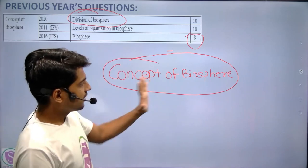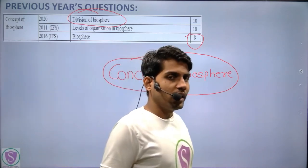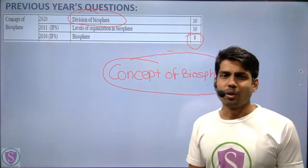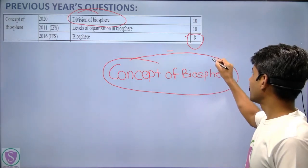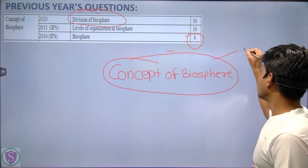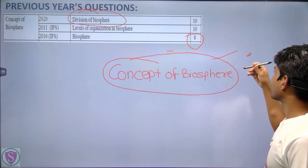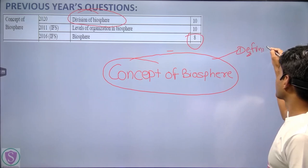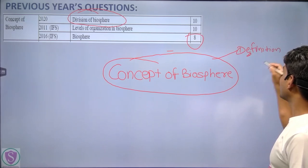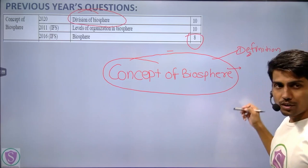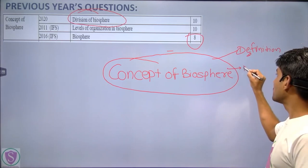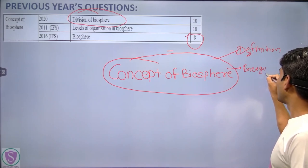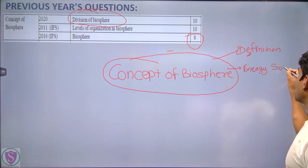Now, under the concept of biosphere, let's recap what we have studied so far. First we saw the general definition of the biosphere, and after that we also saw the energy sources — where the biosphere's energy comes from.